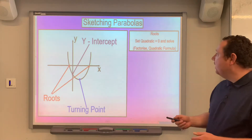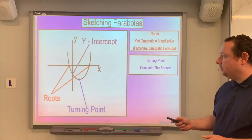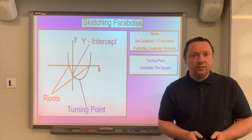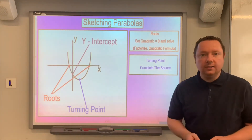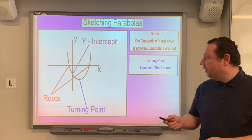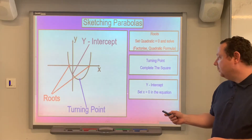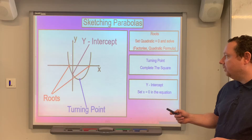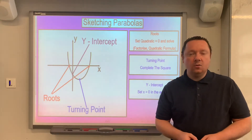The next thing we have to look at is the turning point — that's where the graph turns. To find the turning point, as shown in my previous video, we always complete the square, and that tells us the turning point nice and simply. The last thing we want to do is find where it cuts the y-axis. That's nice and simple — it cuts the y-axis where x equals zero, so we set x equal to zero and find the y-intercept.